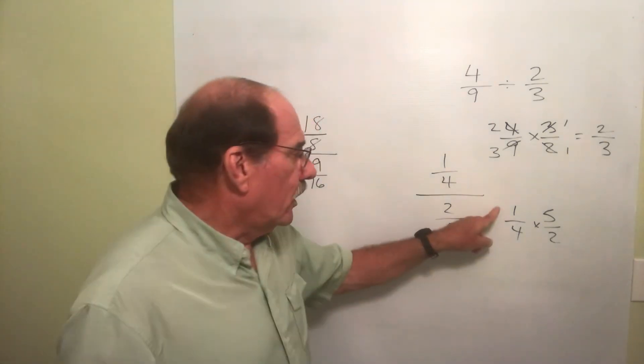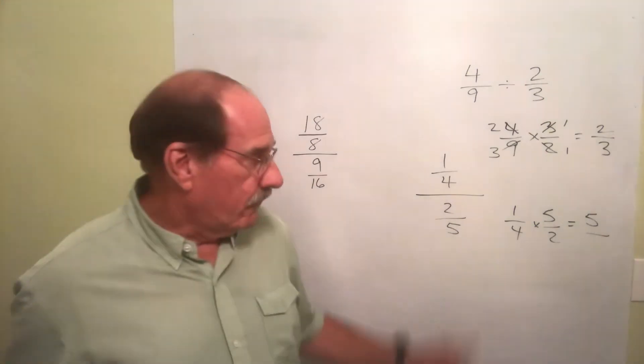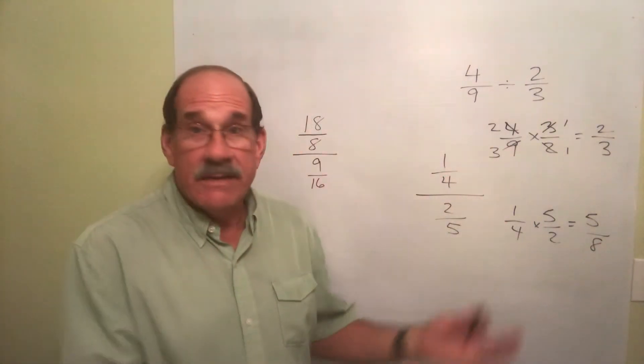Multiply. One times five is five. Four times two, that's eight. And that's the final answer.